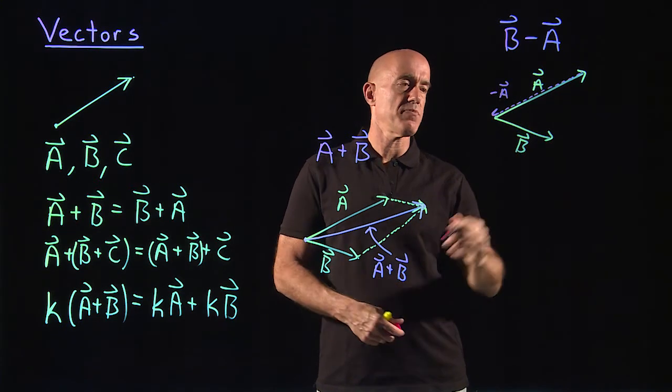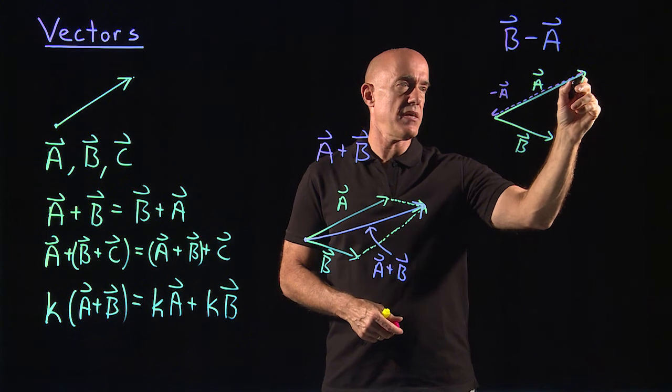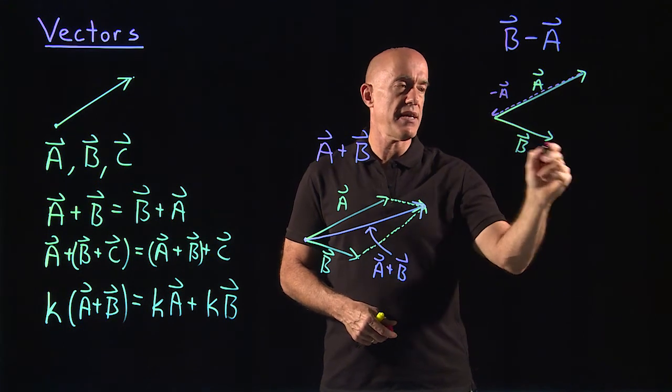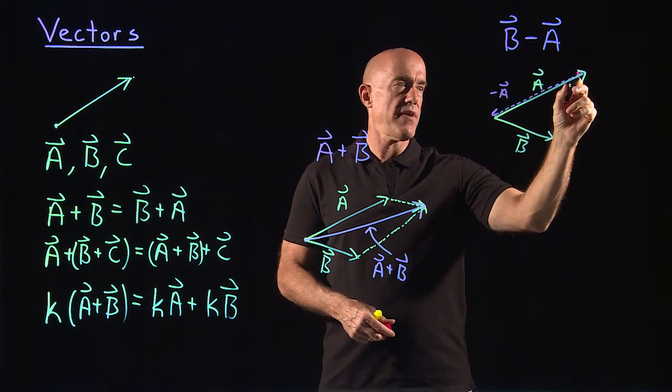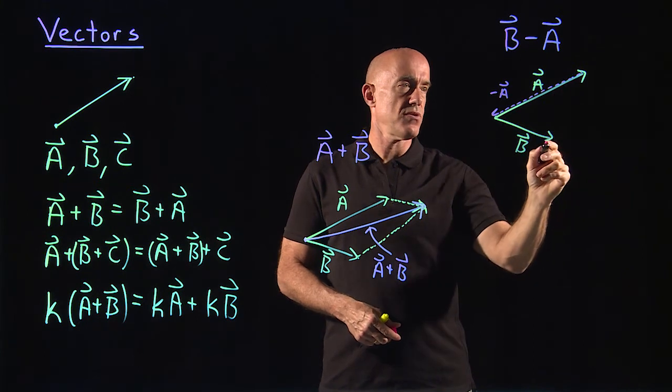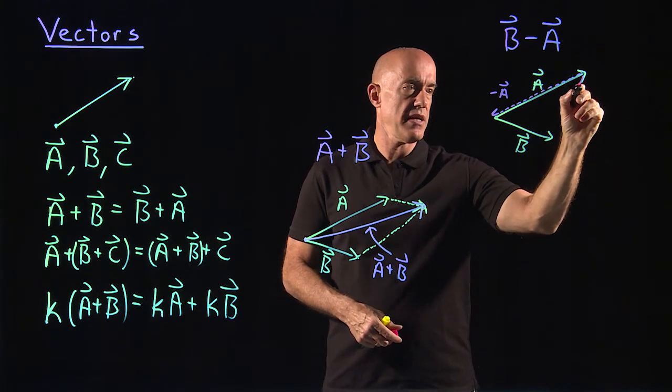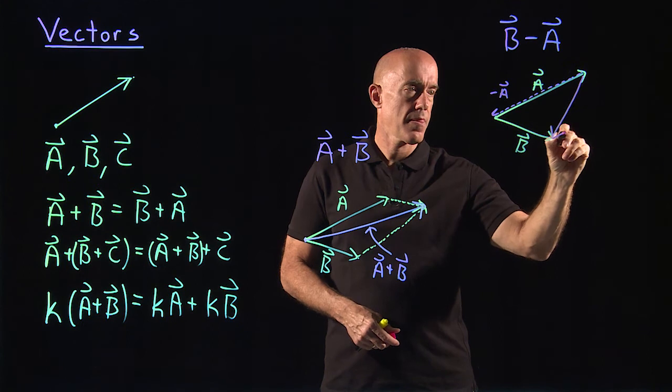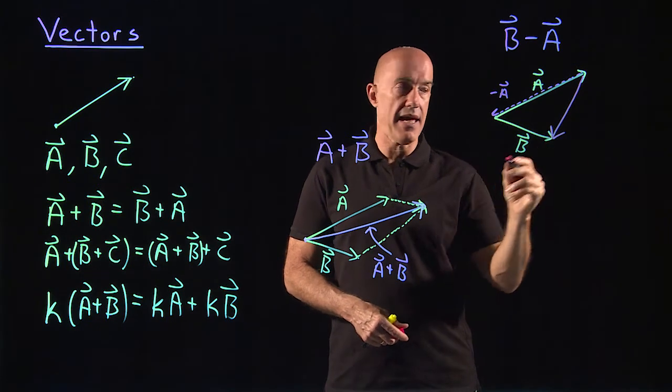And then we're all set up to draw a vector from their head to tail now. So we can draw a vector from tail to head. So this vector here will be b minus a.